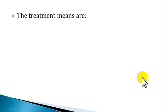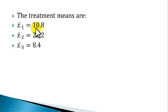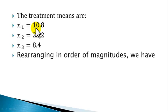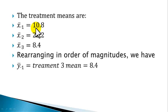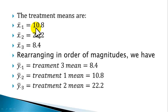The treatment means are: X-bar dot 1 equals 10.8, X-bar dot 2 equals 22.2, and X-bar dot 3 equals 8.4. Rearranging in order of magnitude: Y-bar dot 1 (the lowest) is 8.4, corresponding to treatment 3 mean; Y-bar dot 2 (the next lowest) is 10.8, corresponding to treatment 1 mean; and Y-bar dot 3 (the largest) is 22.2, corresponding to treatment 2 mean.